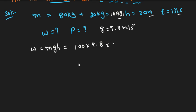Height is 30 meters. So total work is 100 into 9.8 into 30, which equals 29,400 joules.